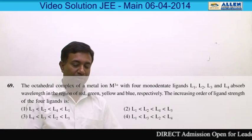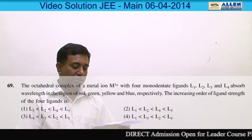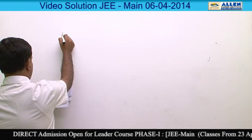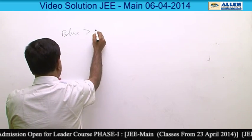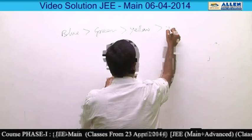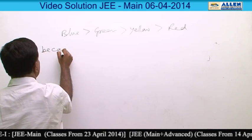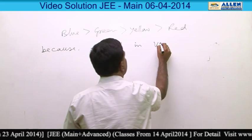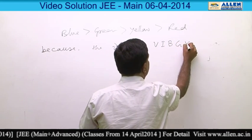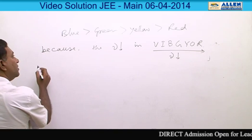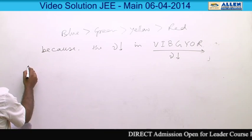Question number 69. The ligands are given with their absorbed colors. The frequency order for the absorbed color is: blue, green, yellow, red — because the frequency decreases in this order. The observed color corresponds to the respective ligands.